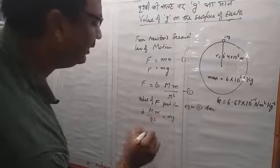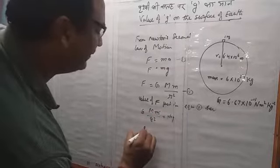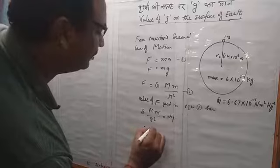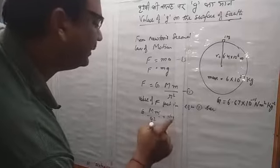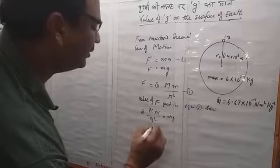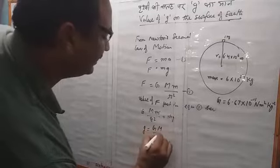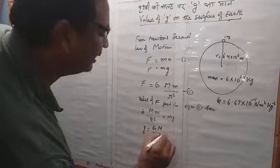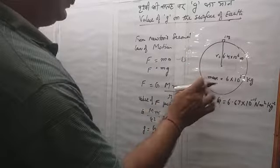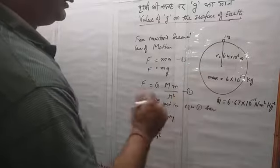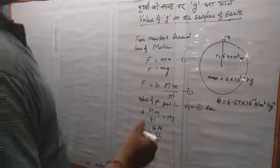This small m and the other small m are the same, so they cancel. Therefore, small g is equal to G·M / R², where M is the capital mass of Earth and R is the radius.